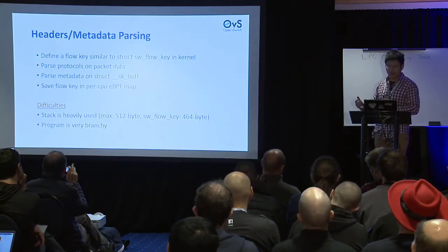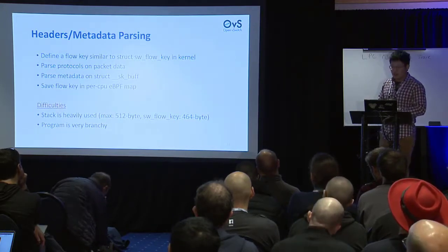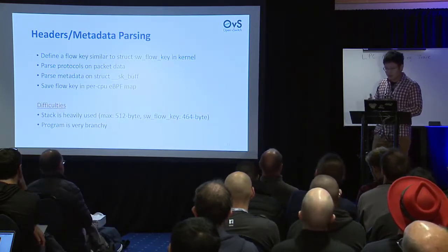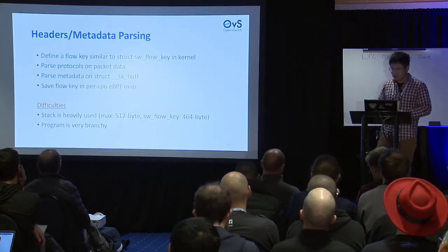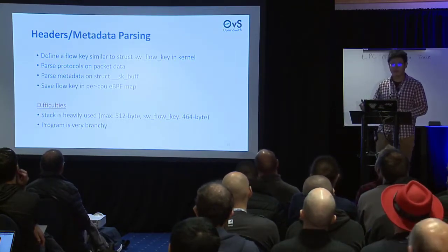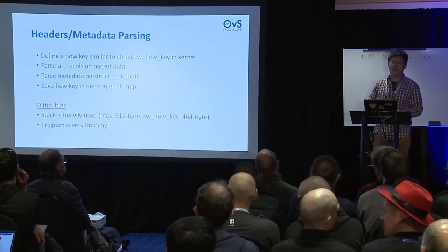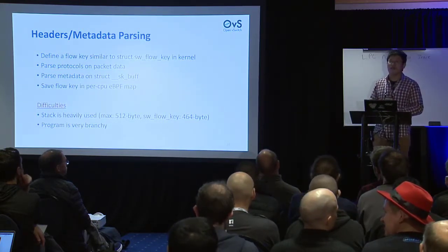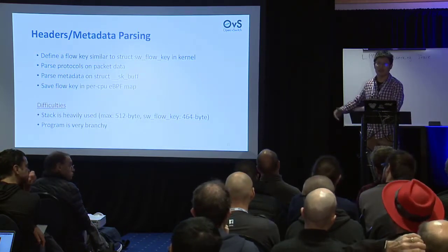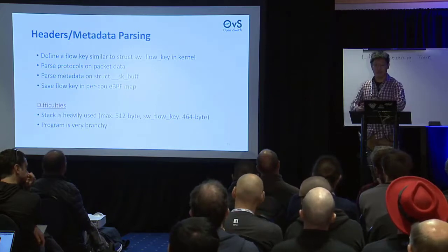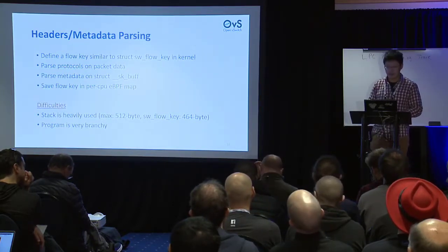There are some difficulties at the parsing stage. Stack usage is heavy — the SW flow key is 4,464 bytes, close to the maximum. The program is also very branchy, so after parsing, another BPF program must be created because subsequent processing would greatly increase the program's complexity.